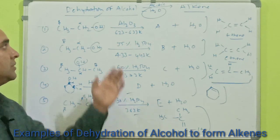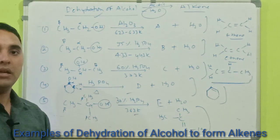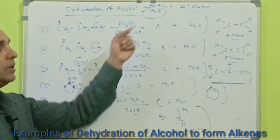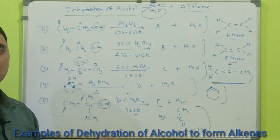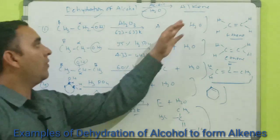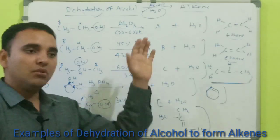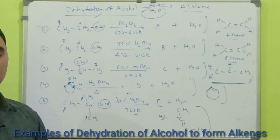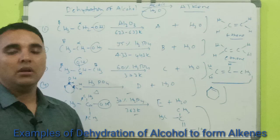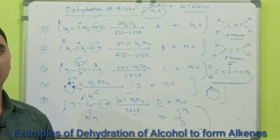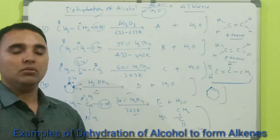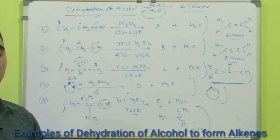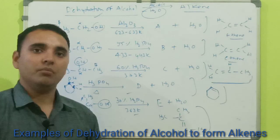So these questions are based on dehydration of alcohol, which takes place in the presence of acid and heat. Dehydration involves elimination of a water molecule, leading to alkene formation. It is a beta-elimination reaction because the hydrogen is removed from the beta carbon and the OH group from the alpha carbon, forming a double bond between those two carbons.